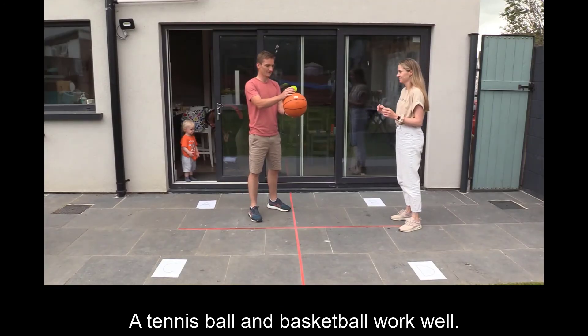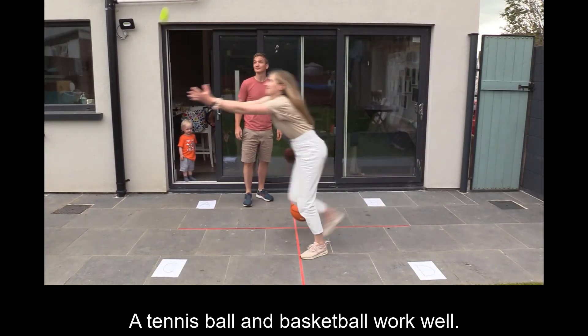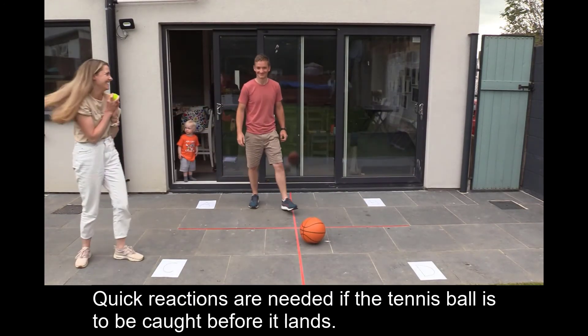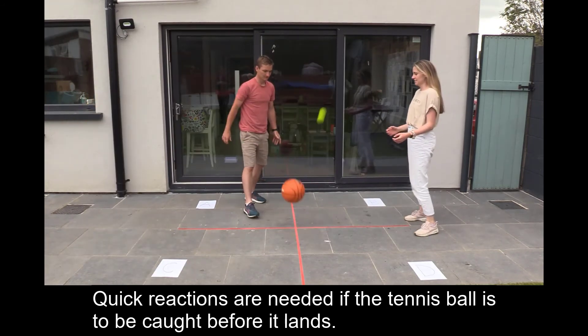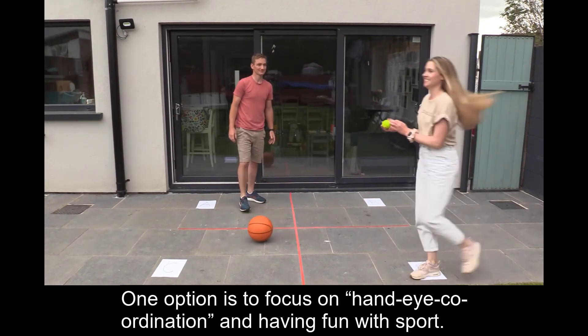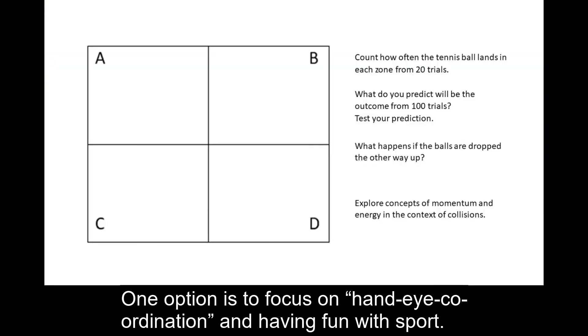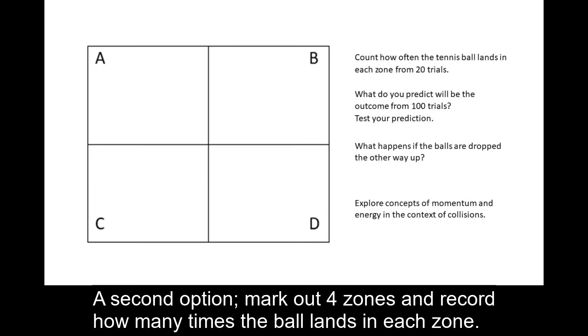A tennis ball and basketball work well. Quick reactions are needed if the tennis ball is to be caught before it lands. One option is to focus on hand-eye coordination and having fun with sport. A second option is to mark out four zones and record how many times the ball lands in each zone.